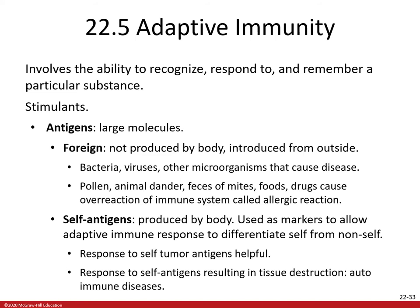Everything discussed thus far has been about innate immunity or nonspecific resistance. Now we start talking about adaptive immunity, also known as specific resistance. This involves the ability to recognize, respond to, and remember a particular substance. Adaptive immunity can respond faster and stronger to an infection after the first encounter. Large molecules called antigens stimulate our adaptive immunity, and there are two types: foreign antigens and self-antigens.